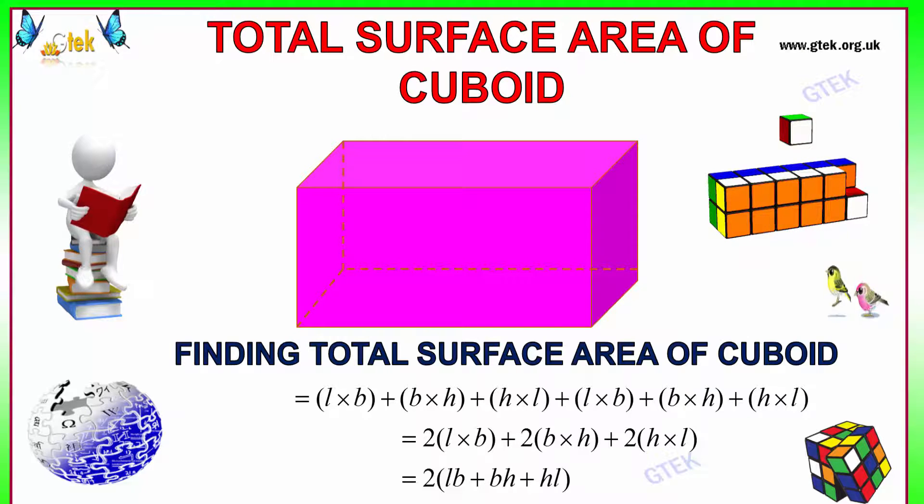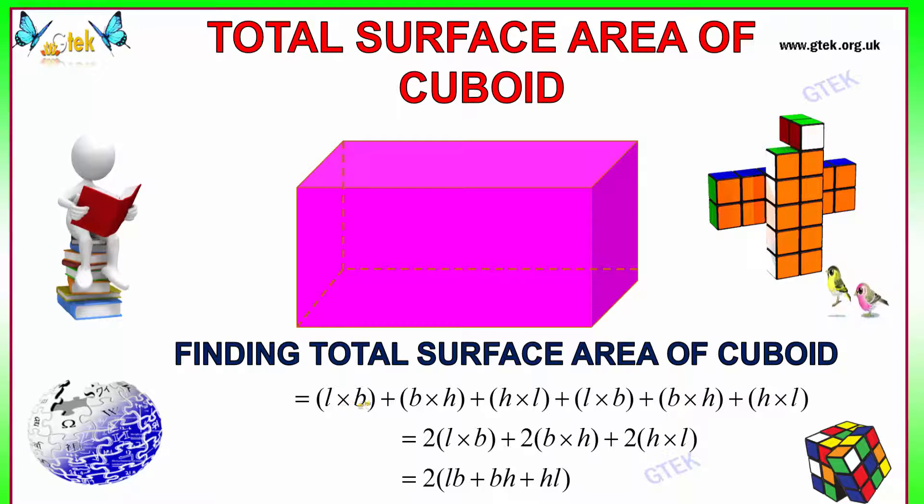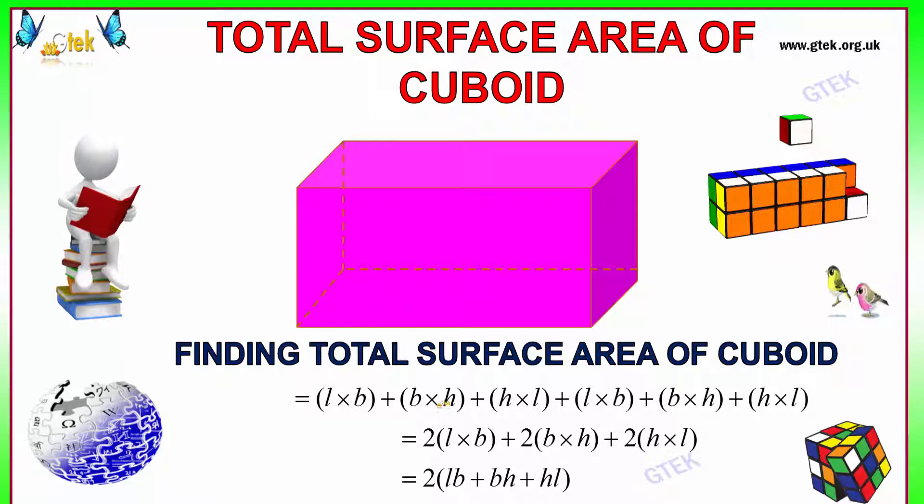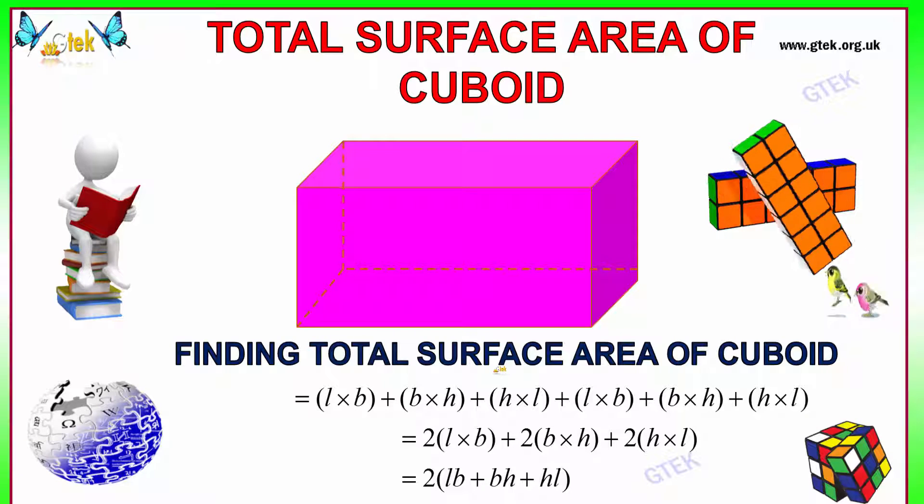For cuboid, the surface area of the cuboid is length into breadth plus breadth into height. So it's 2 into LB plus BH plus HL. That's your total surface area of the cuboid.